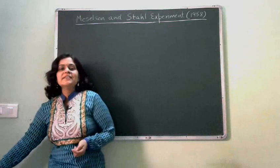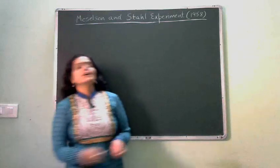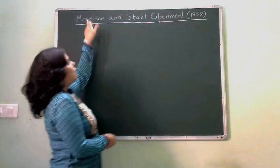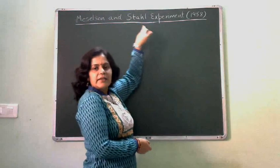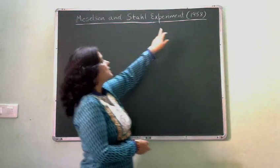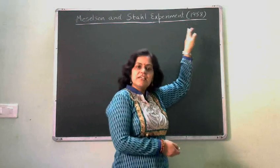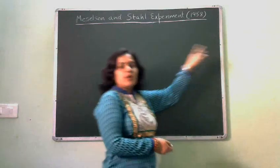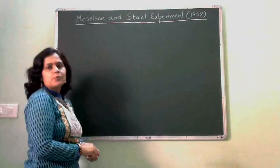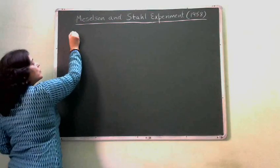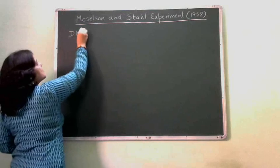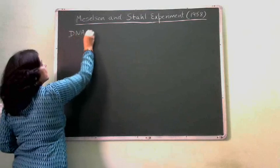This experiment was done by Matthew Meselson and Franklin Stahl. They did this experiment in 1958. What does Meselson and Stahl prove? They prove that DNA replication is semi-conservative.